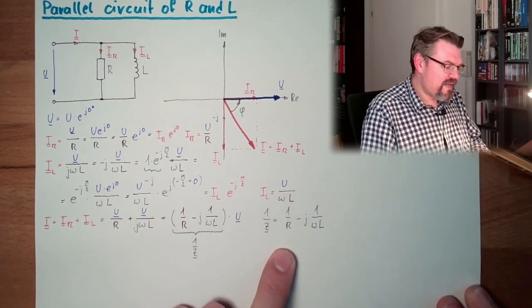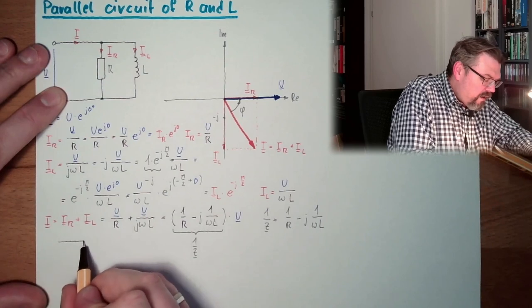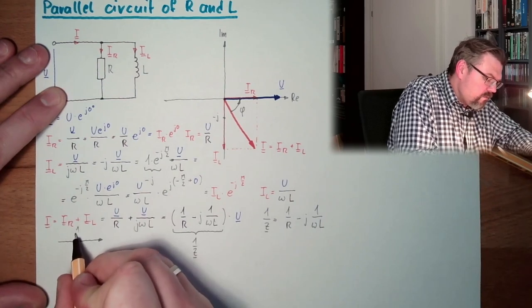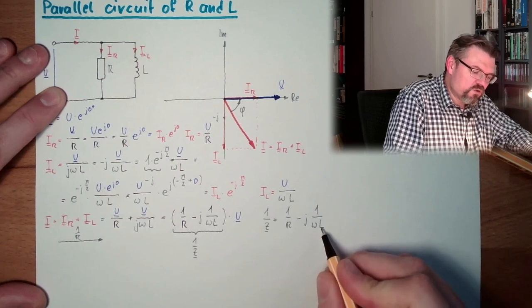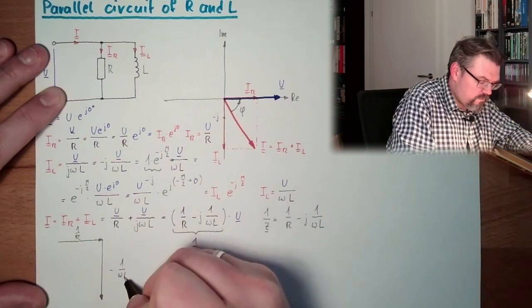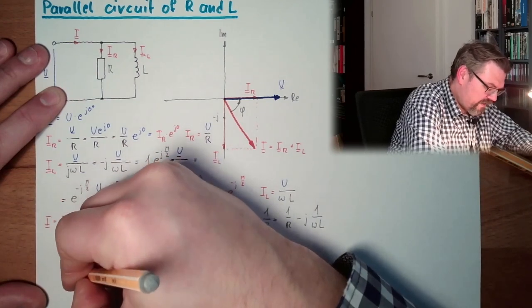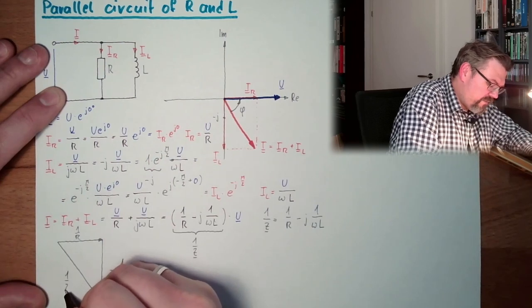Let's have again a look. We are having here real part, 1 divided by R. We are having here an imaginary part, minus omega, 1 divided by omega L. And this results 1 divided by Z, the sum of this. 1 divided by Z.